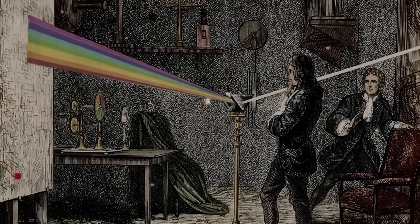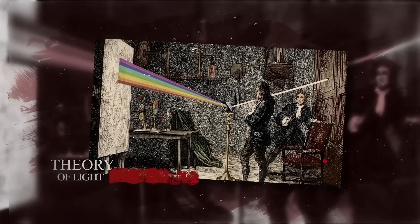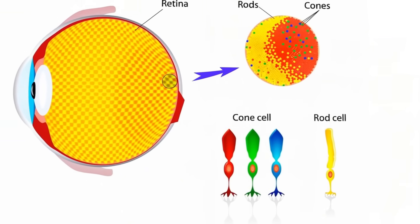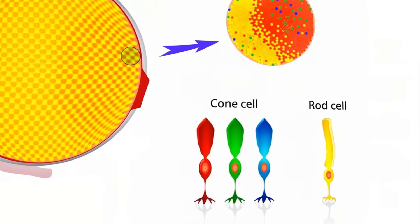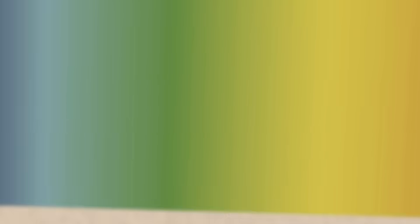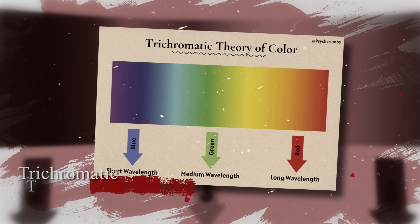Back when Newton divided light into seven colors, few asked how the eye saw them. Young did. He proposed that inside the retina were three types of nerve fibers, each sensitive to a different wavelength, red, green, and blue. He showed that any color could be formed by blending three, the trinity of vision. This became the trichromatic theory of color vision.